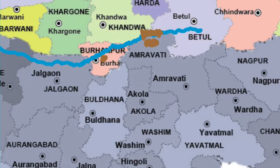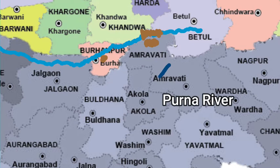One of the most important tributaries of river Tapi is the river Purna. The river Purna originates in the Amravati district and flows through the Akola district and the Buldhana district, ultimately joining river Tapi in the Jalgaon district.